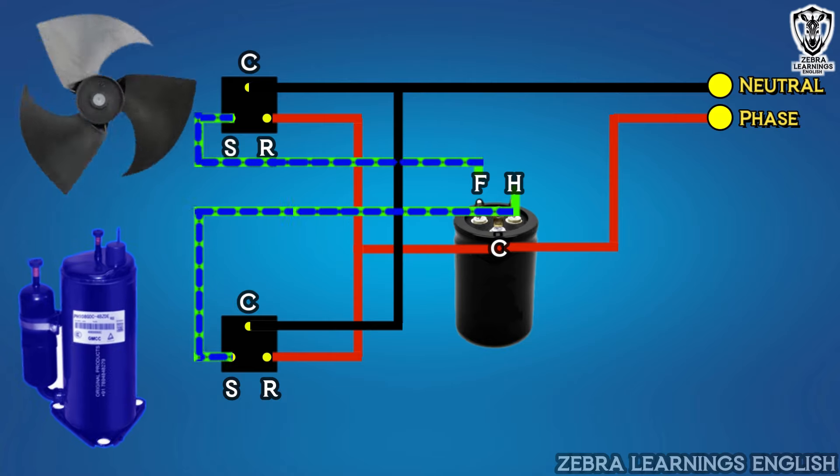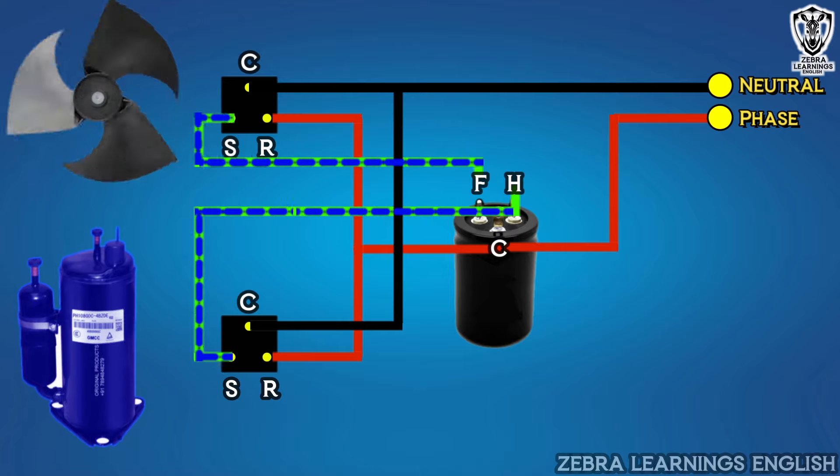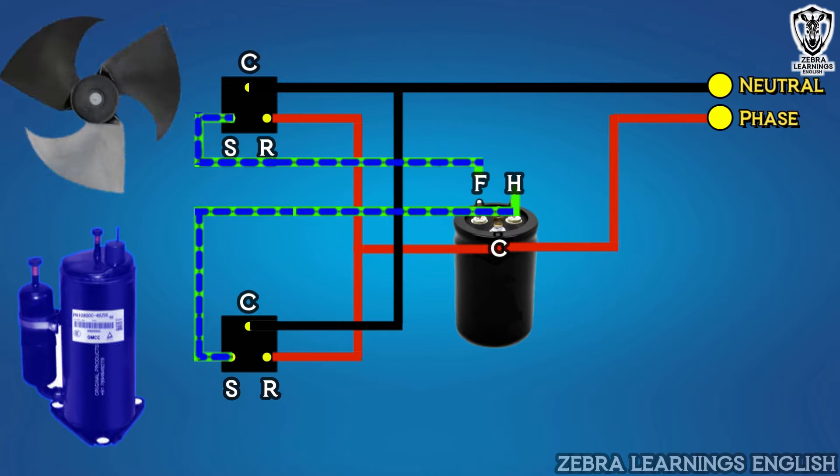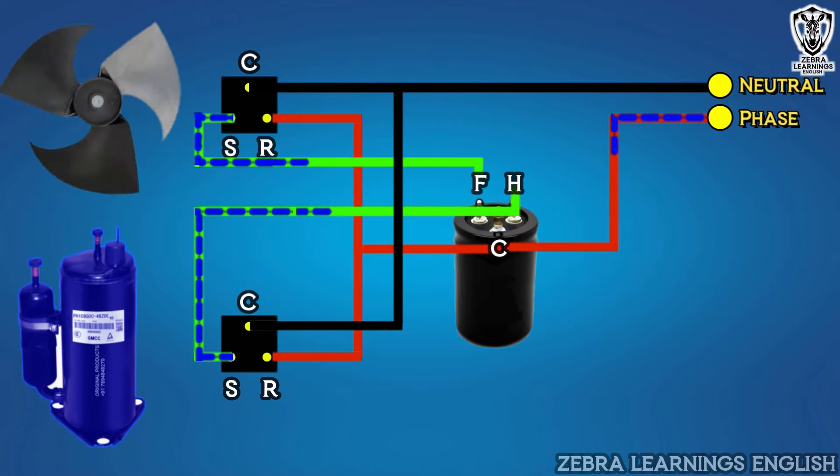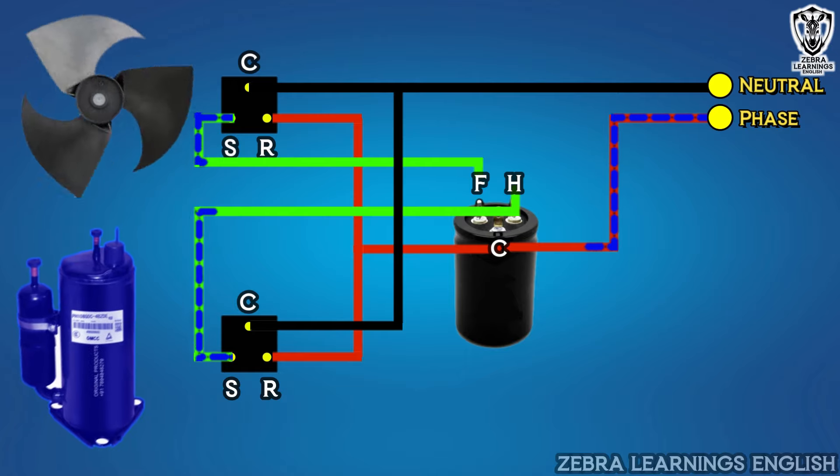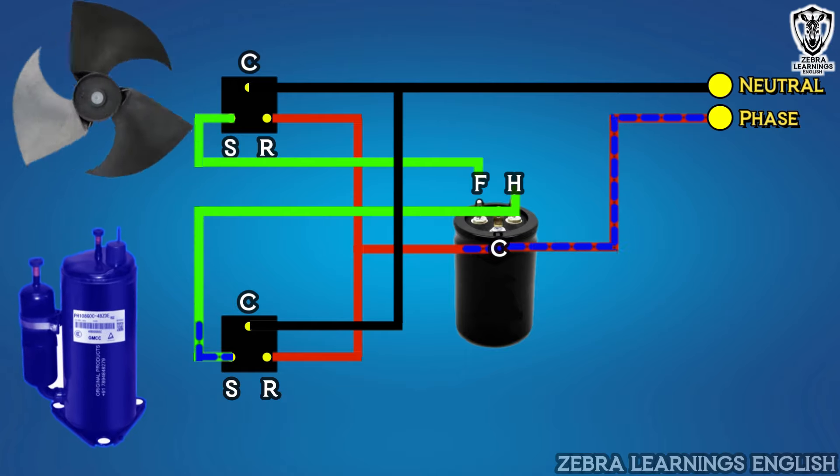After the compressor and fan motor start running, the capacitor will cut off. Once the capacitor cuts off, the current from the phase will flow through the running terminal and keep the compressor and fan motor running.